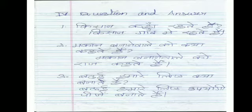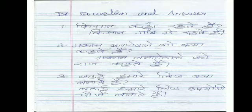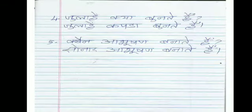Third one: Patyi hamare liye kya banate hain? Patyi hamare liye upyogi chizein banate hain — useful things. Carpenter: aamnde — chair, table, and all other things. Next one: Jylahe kya bunte hain? Next one: Kaun aabhushan banate hain? Sonar aabhushan banate hain.